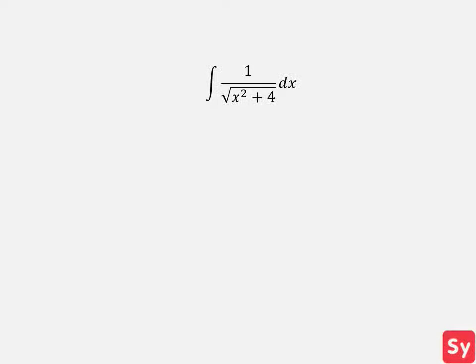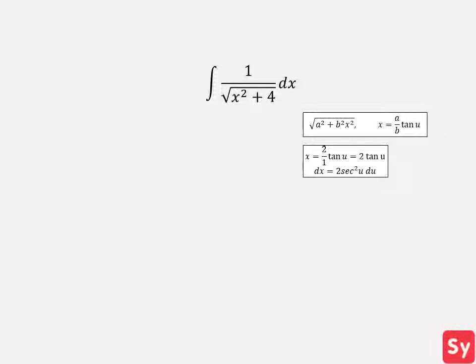Last example, we have the integral of 1 over the square root of x squared plus 4. We take a look at the integrand and see that the denominator resembles the square root of a squared plus b squared times x squared.